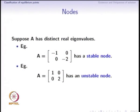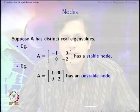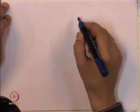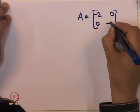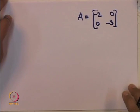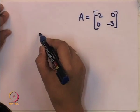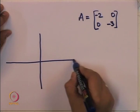A node can be stable or unstable. A stable node is the situation when A has two distinct real eigenvalues and both are negative. When both real eigenvalues are positive, it is called an unstable node. To analyze this, consider how the vector field looks for a particular A. Look at this figure — this is not the same example on the slide, but it explains what a stable node is.